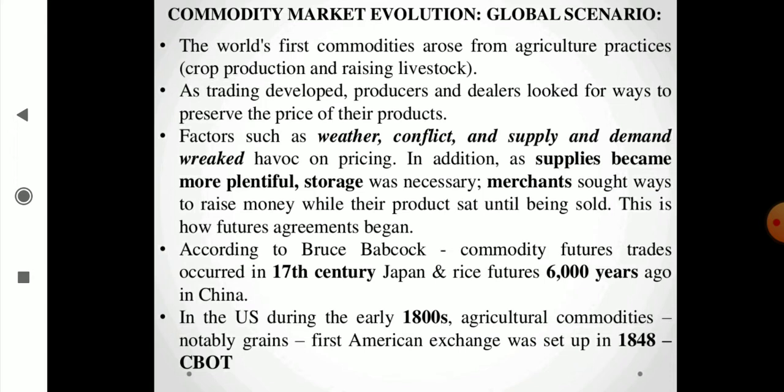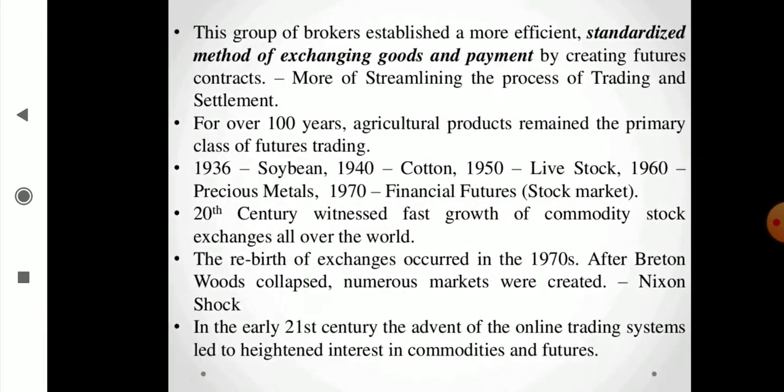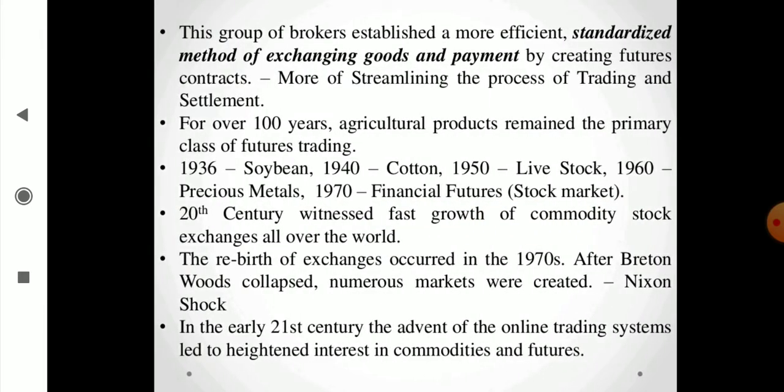Six thousand years ago, commodities were also traded in China. In the US, during the early 1800s, agricultural commodities — notably grains — were first organized under what we call CBOT. This group of brokers established a more efficient, standardized method of exchanging goods and payments. For over a hundred years, agricultural products — soybeans, cotton, livestock, precious metals, and financial futures — remained the primary focus of futures trading.